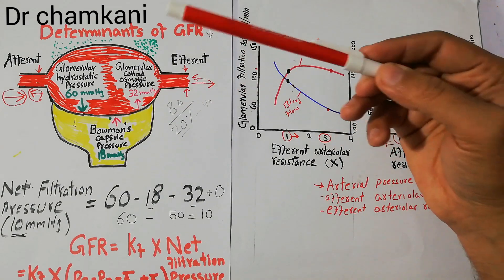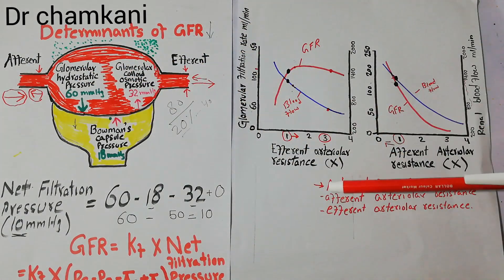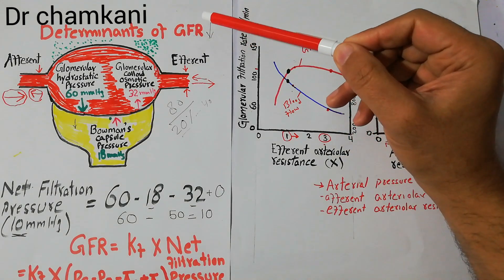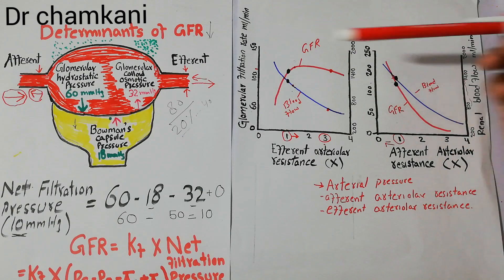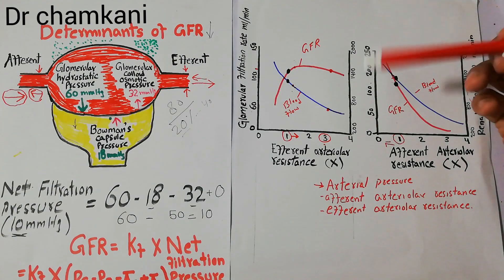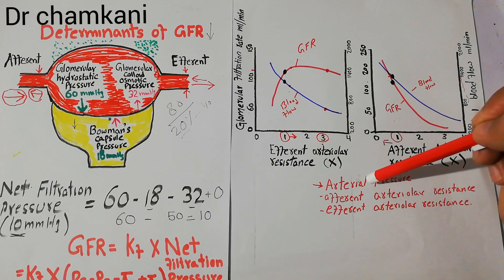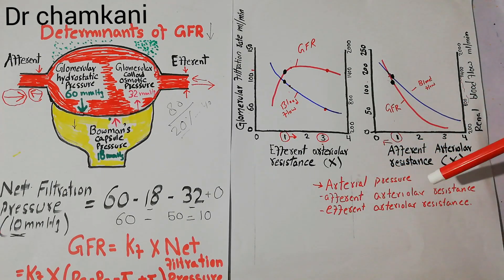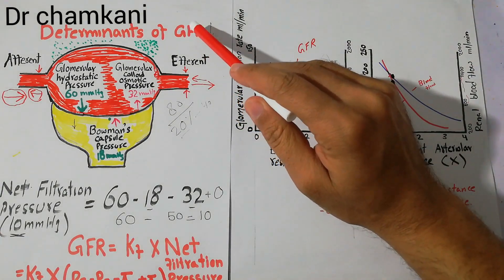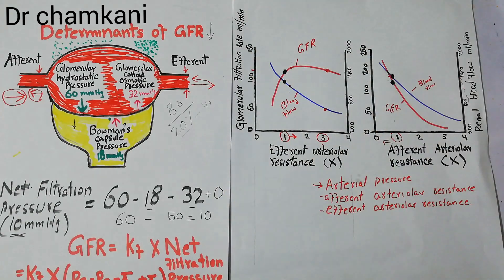This is the summary of the determinants of glomerular hydrostatic pressure and their effect on GFR, which ultimately affects renal blood flow. All conditions and pathologies which increase or decrease arterial pressure, or increase afferent or efferent arteriolar resistance, will ultimately have an effect on the GFR, which in turn will have an effect on renal function. Thanks a lot for watching the video.